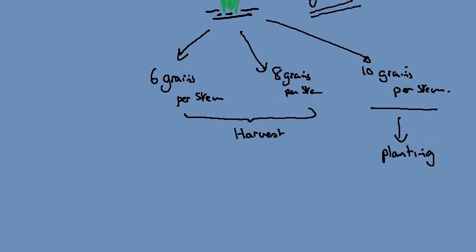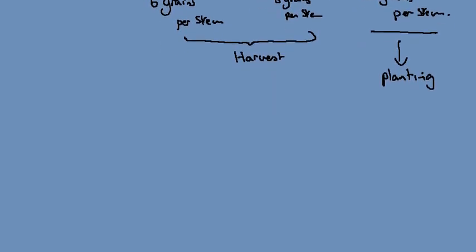In the next generation of rice, he notices that the grains increase to 8 grains per stem, 10 grains per stem.